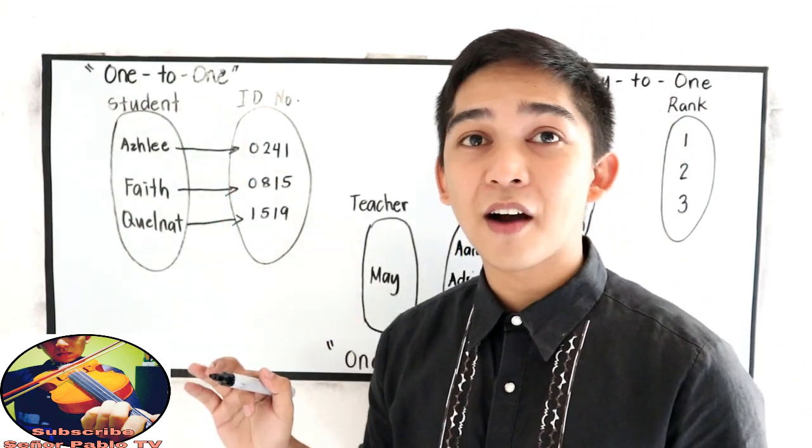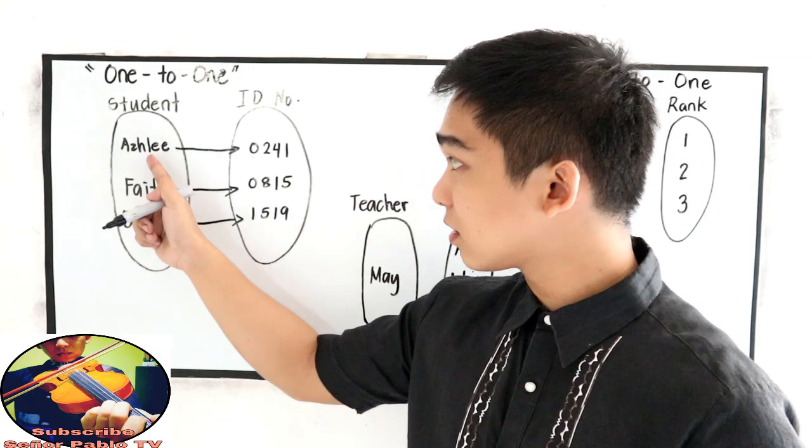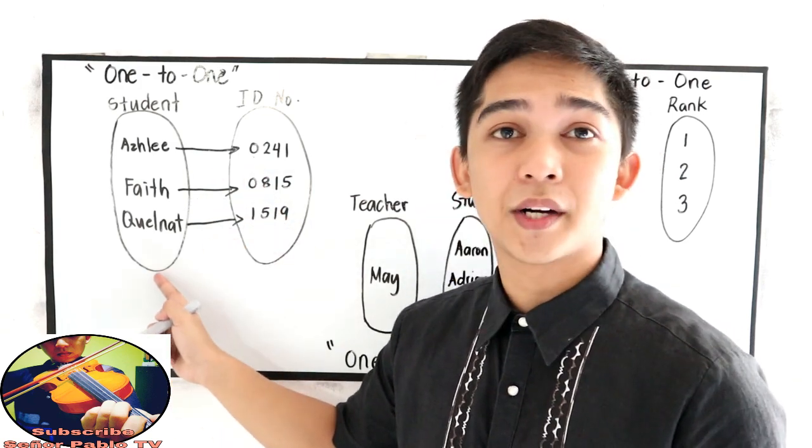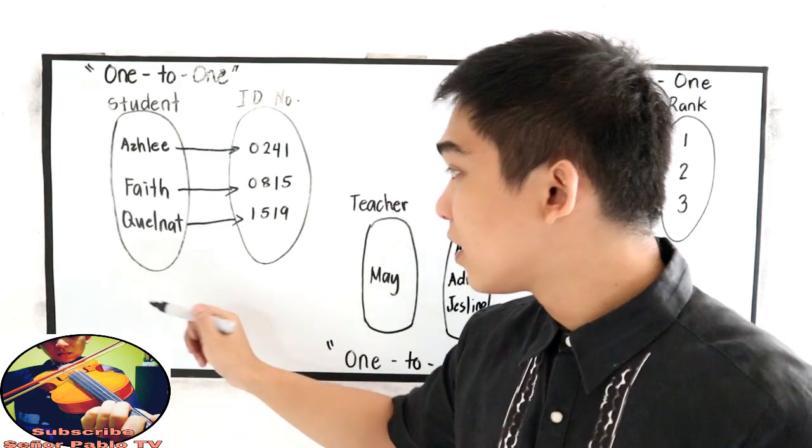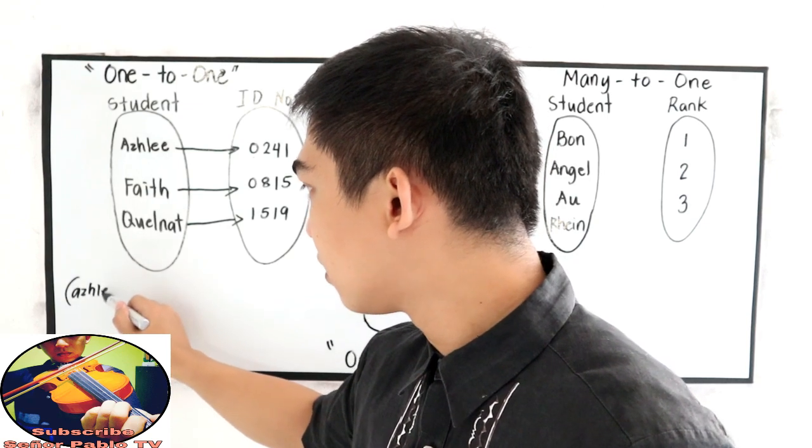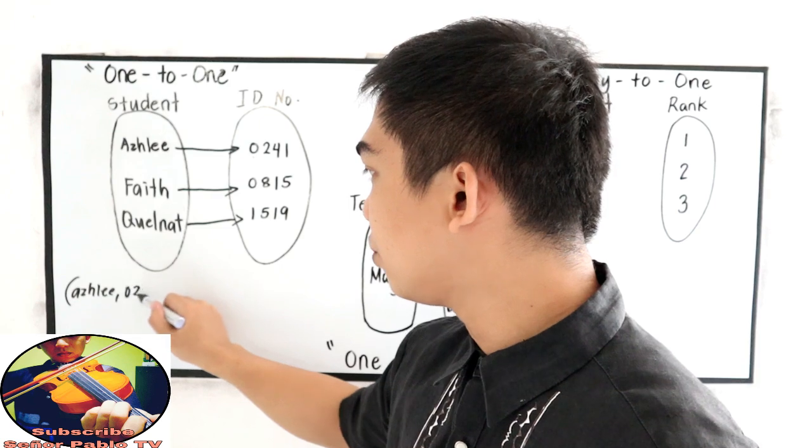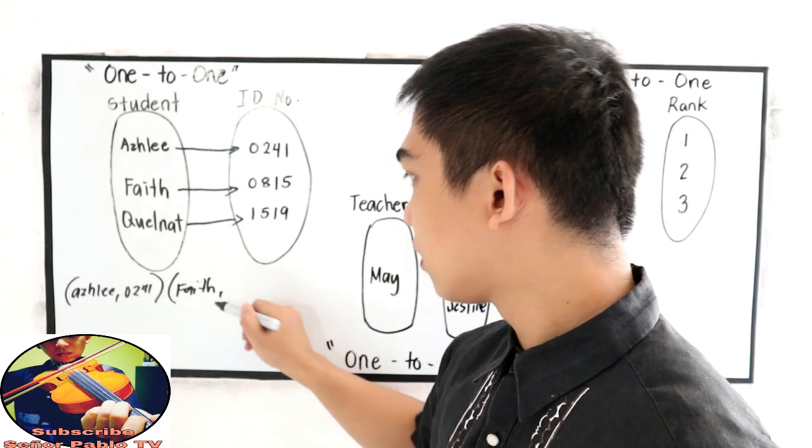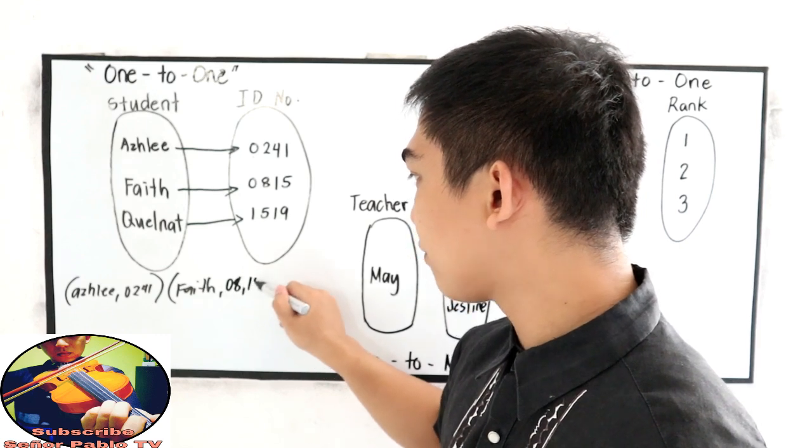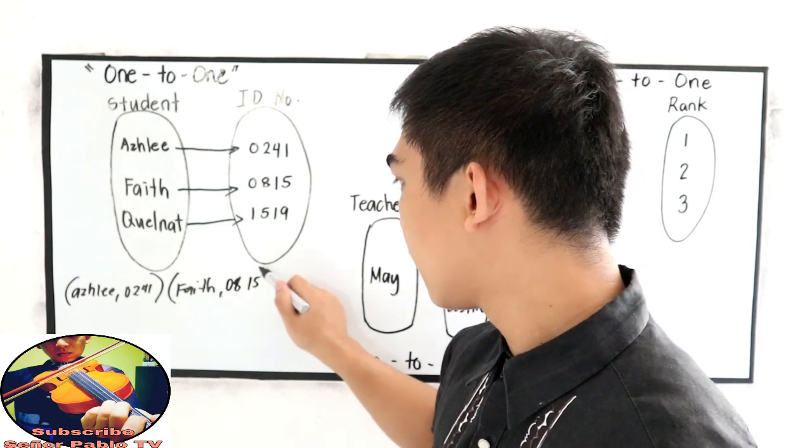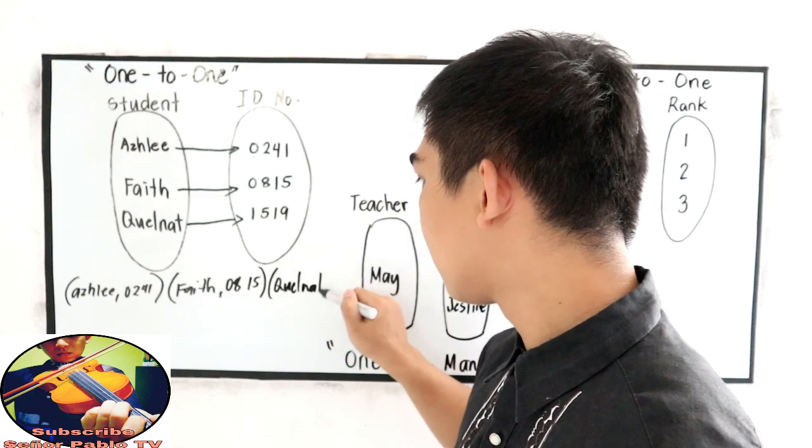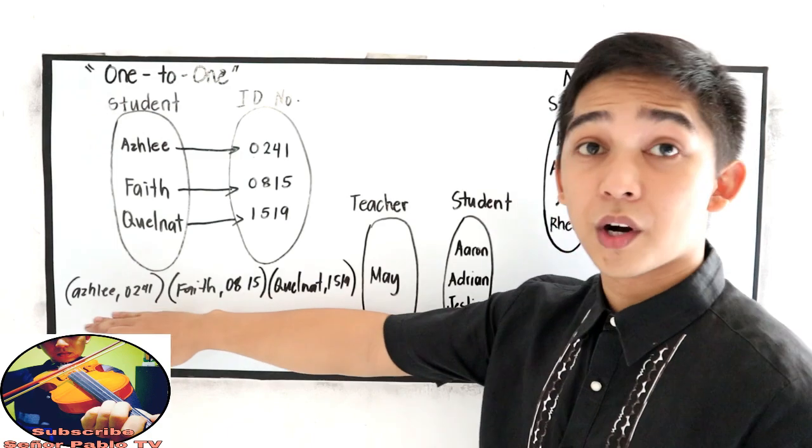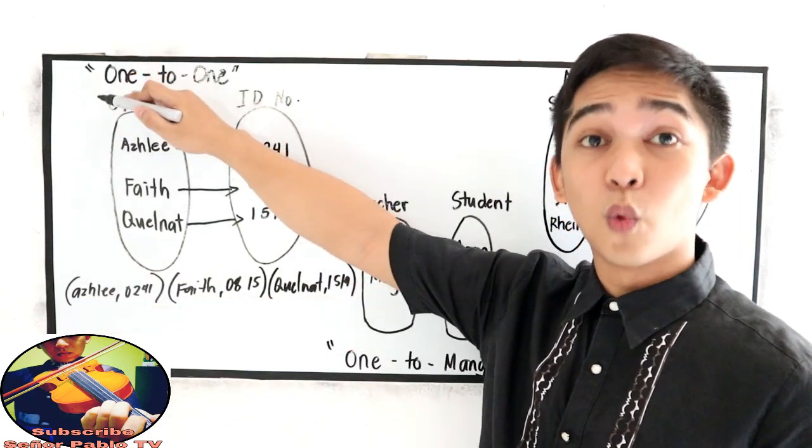We say one-to-one if we have one distinct element for X and a distinct element for Y. So, if we're going to write this as ordered pairs, this will be Ashley 0241. Next, Faith, her ID number is 0815. And Kelna is 1519. This will be our ordered pairs. That is the one-to-one correspondence.